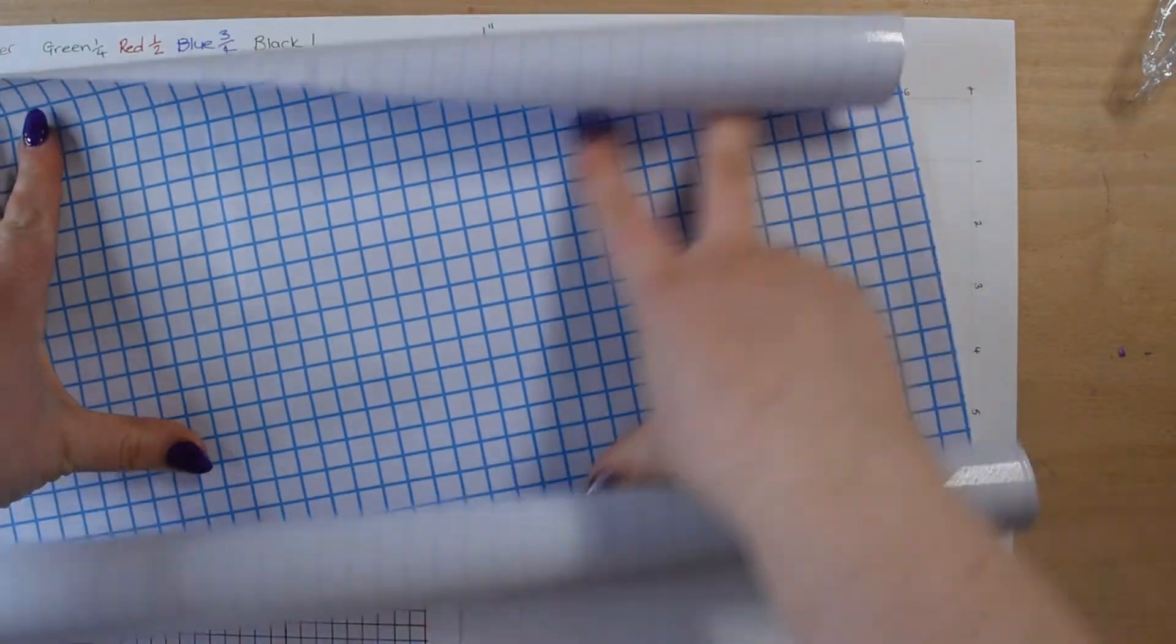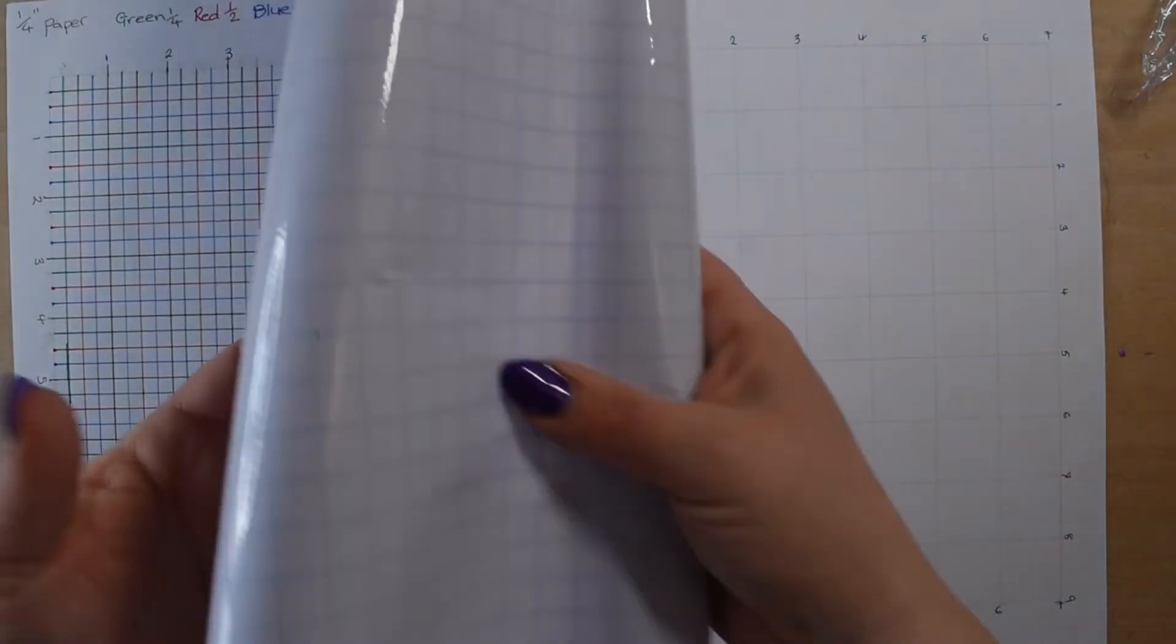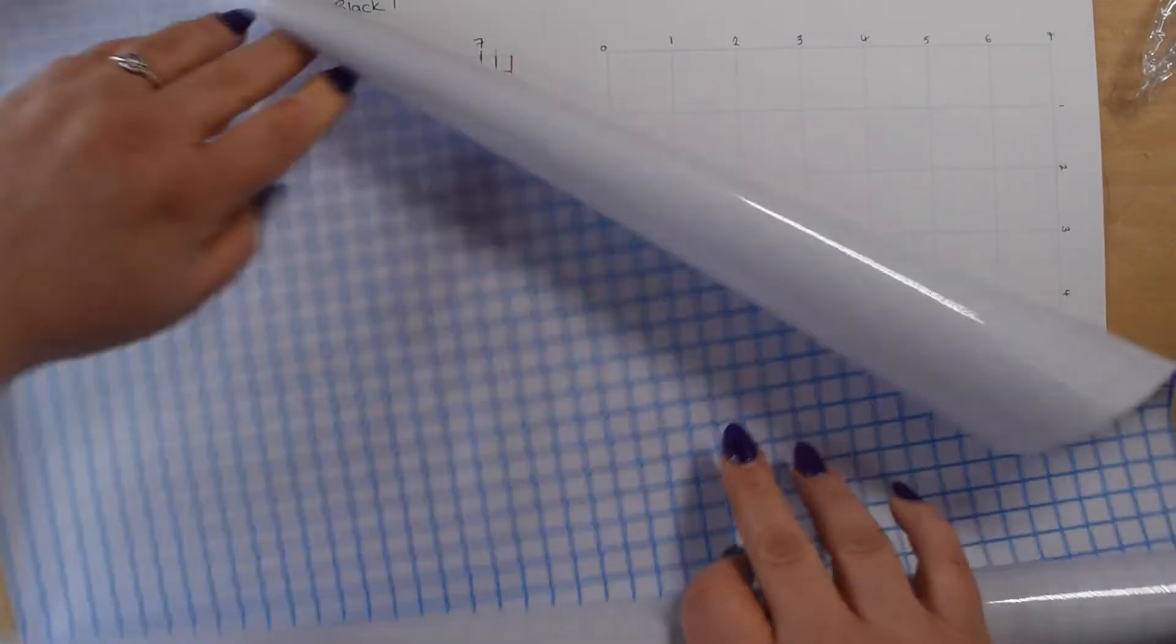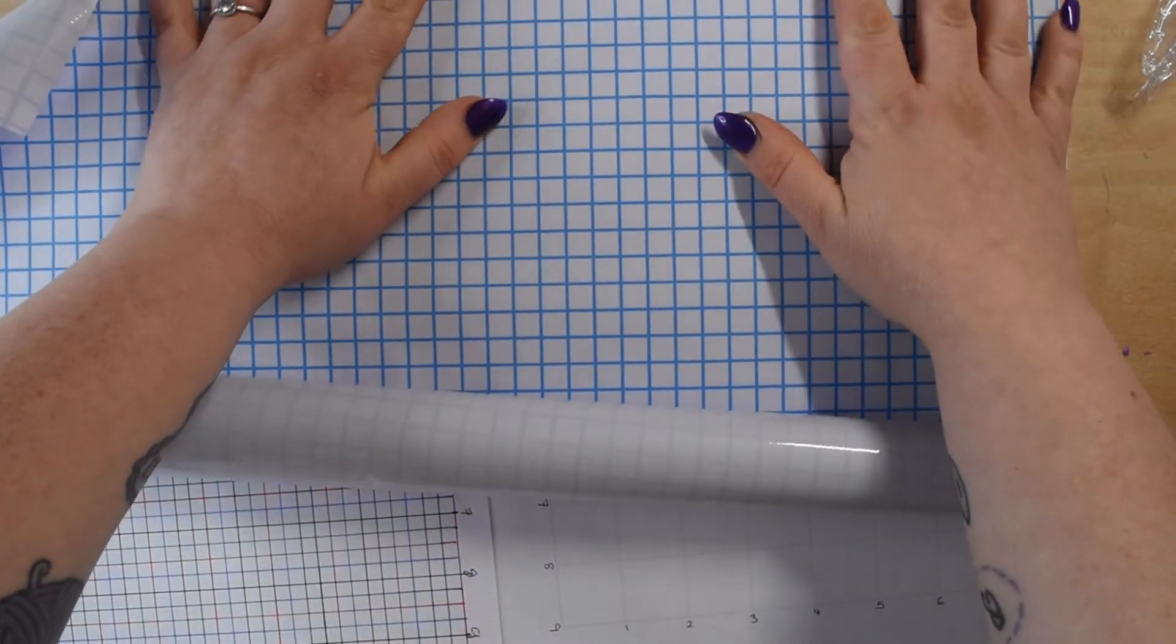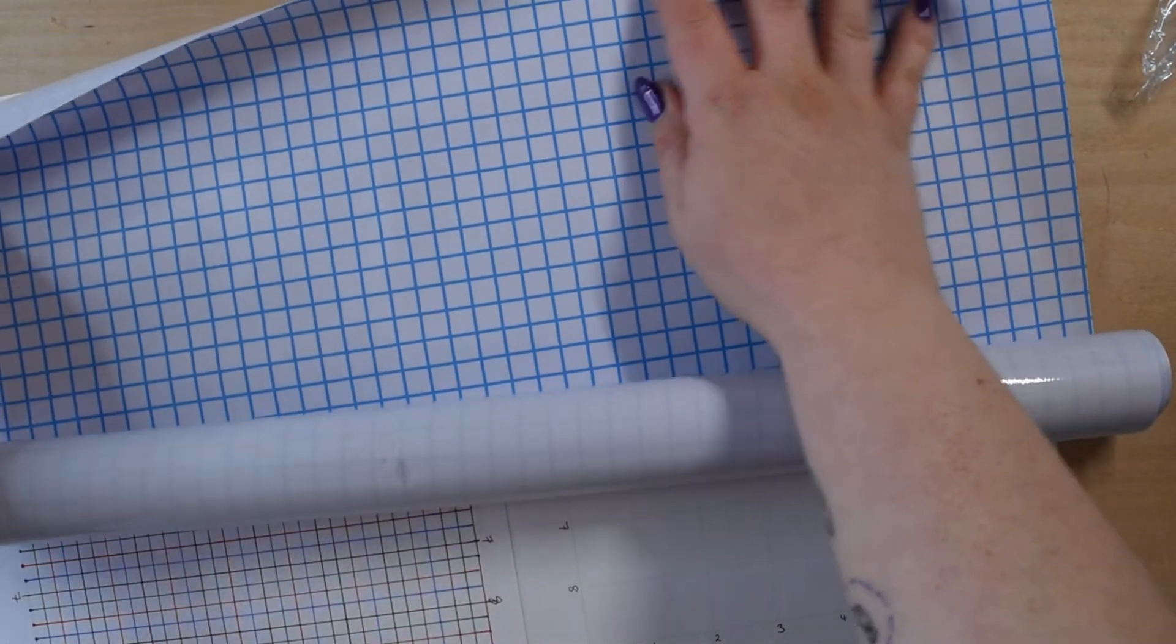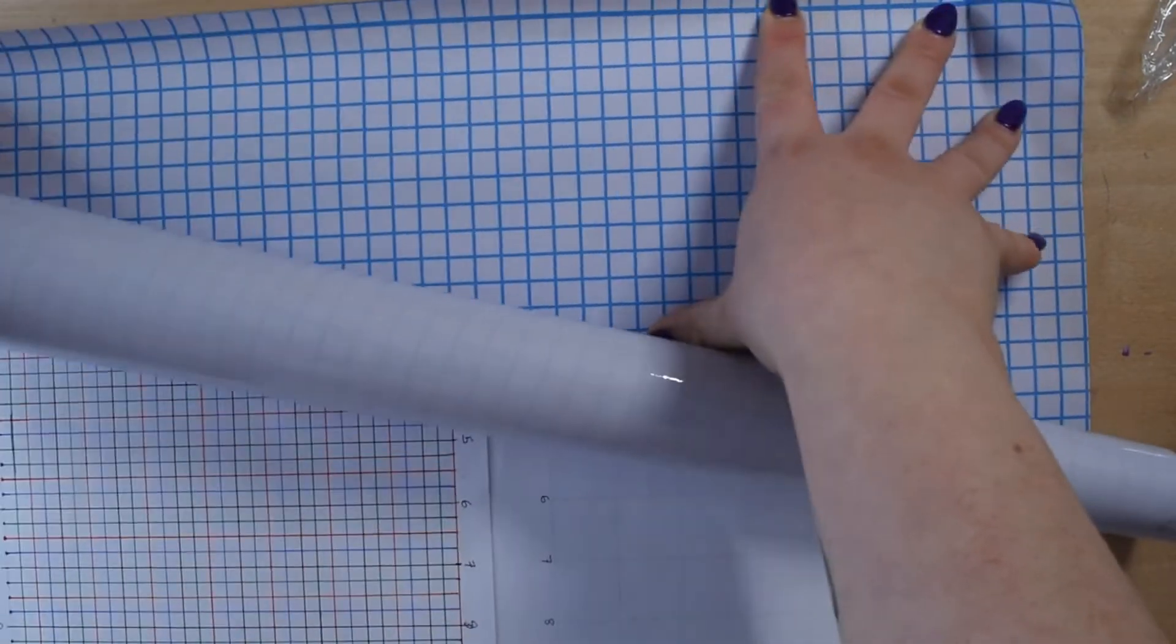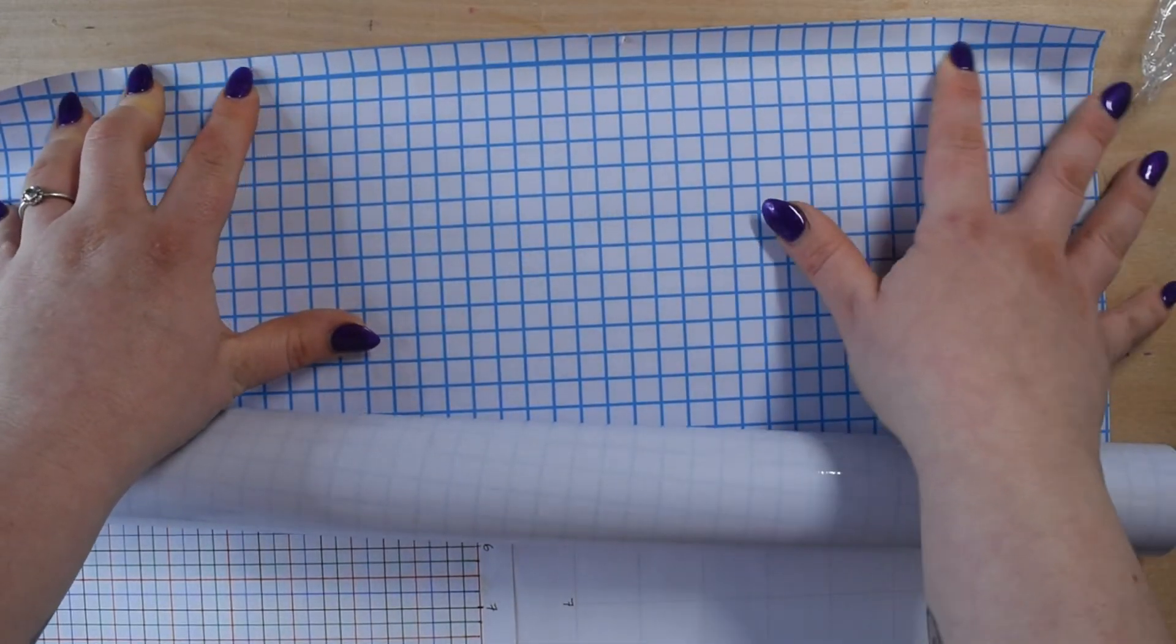You'll see on the inside of it it's the plastic grid. You just want to roughly measure out how much you're going to want. Remember, you want it to go over the edge just a little. Feel over the top for the edge of where your card is.